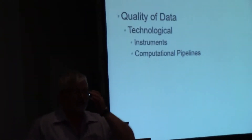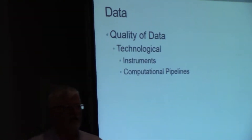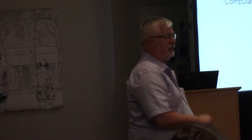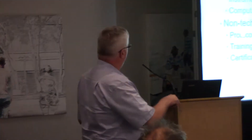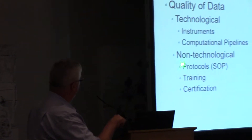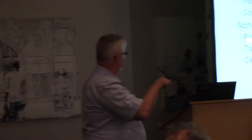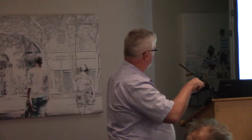For data, there are a number of different aspects of data quality. One is technological — it has to do with the instruments and the computational pipelines, and those are easily controlled. The ones that are less controllable by mathematicians are the non-technological ones: the guy at the bench, the guy collecting the data, how they are trained, and whether they have standard operating procedures, and whether or not there is certification.